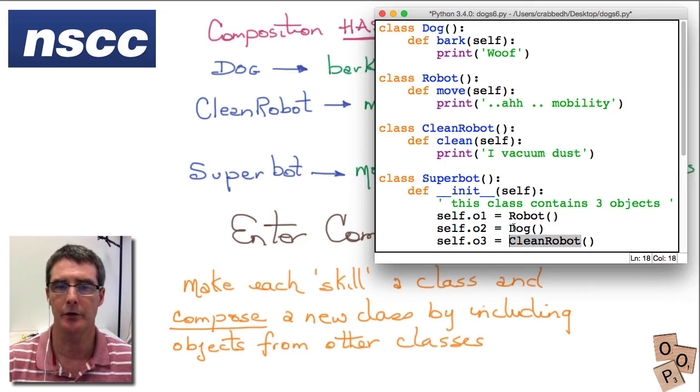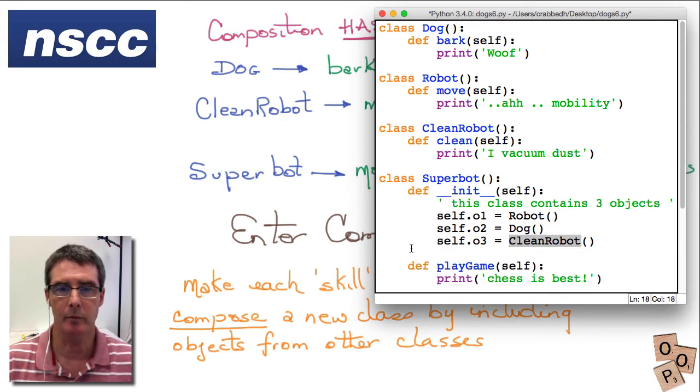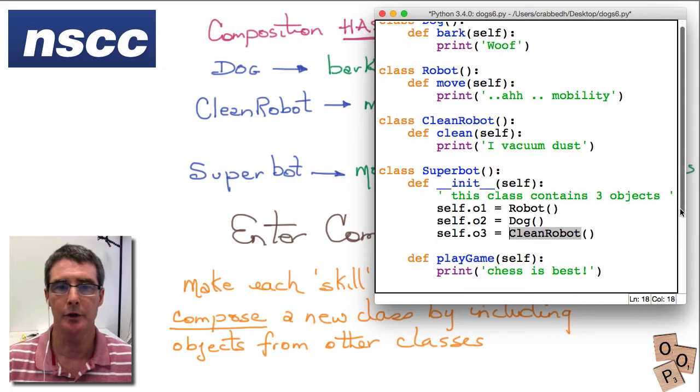We're using composition. So we're creating our super bot and we're including objects which come from other classes. Now this class has something unique in it. It can play games. So it can play chess as one of the games. So how are we going to use this?